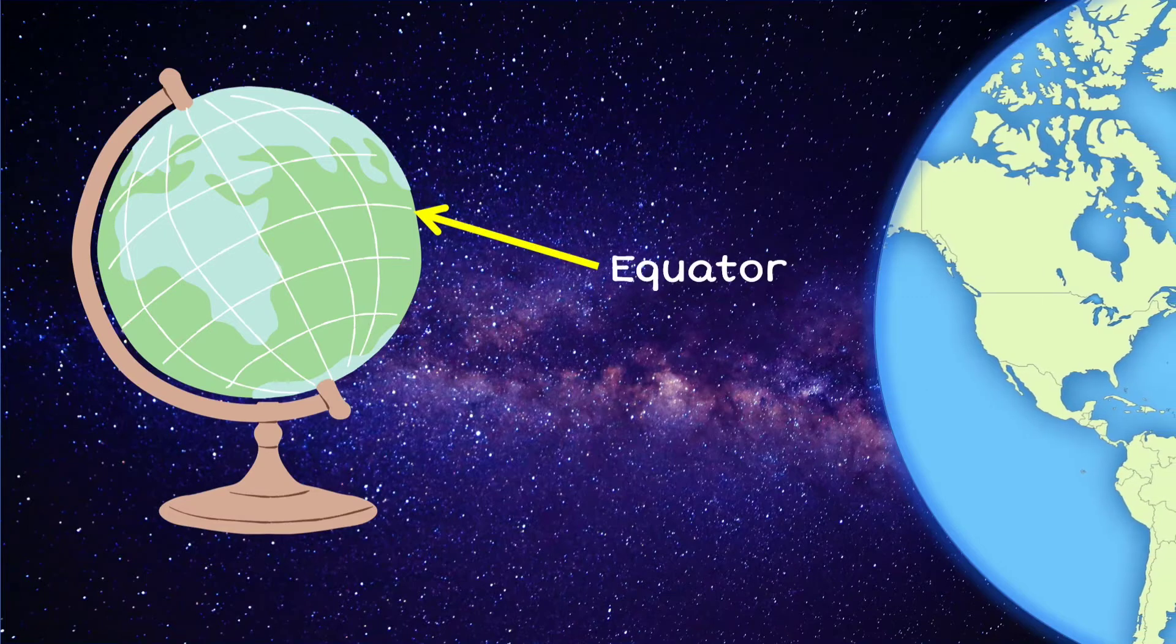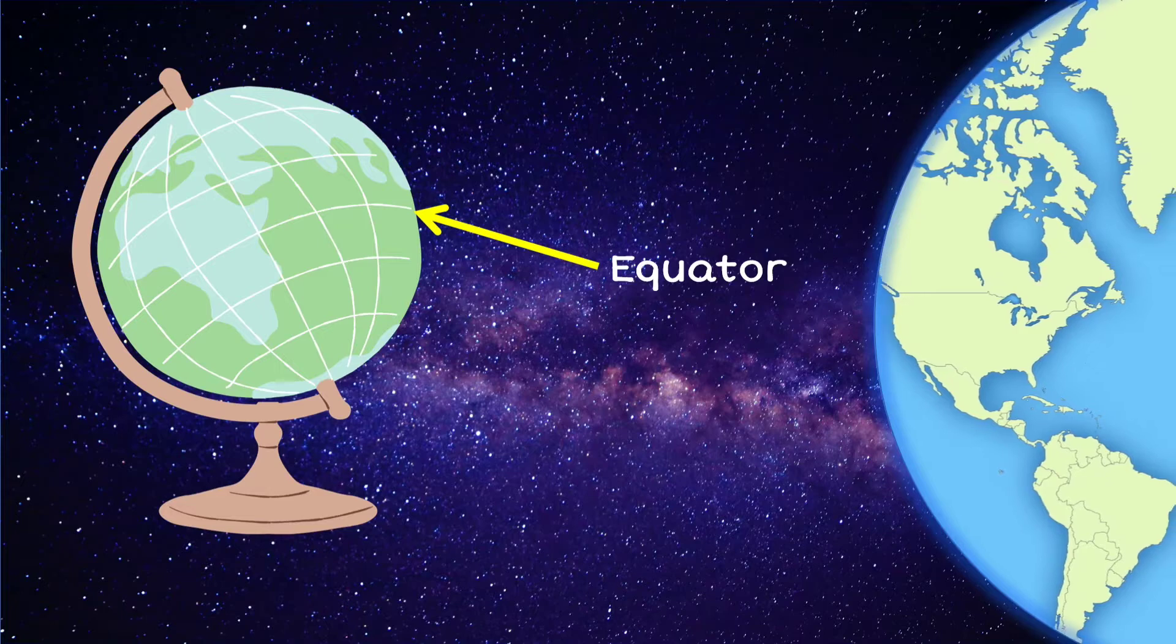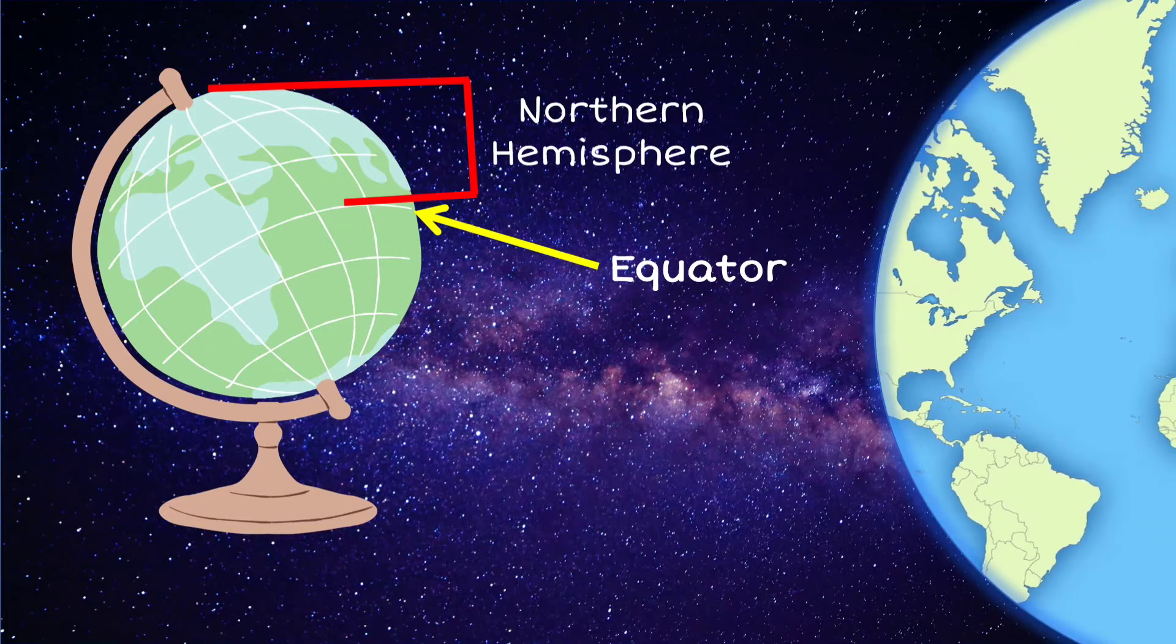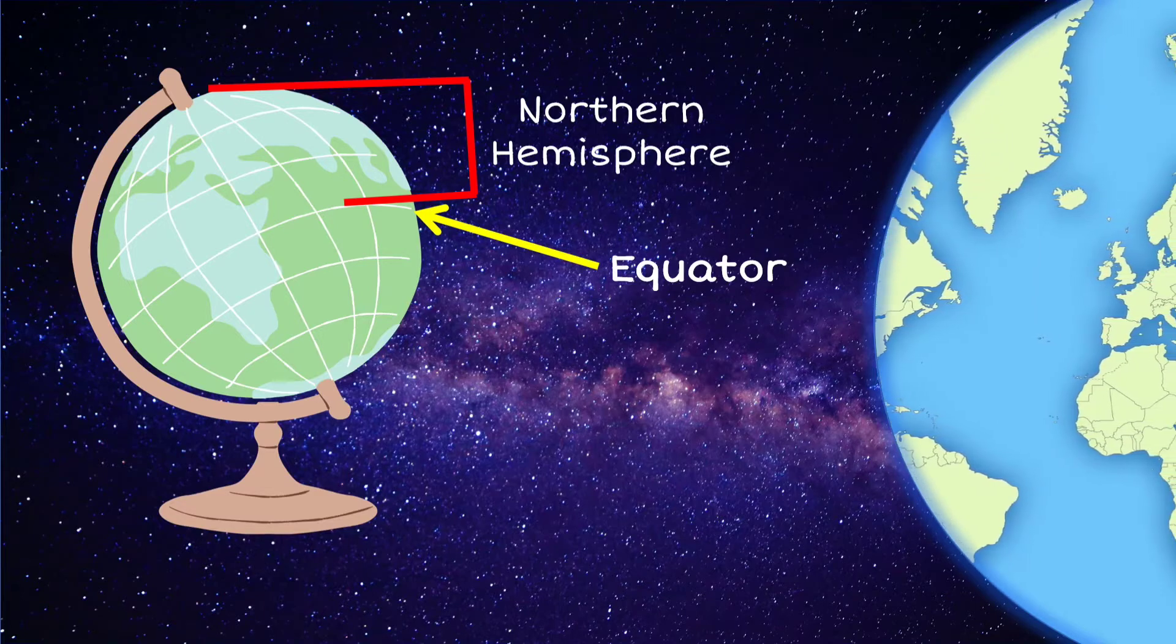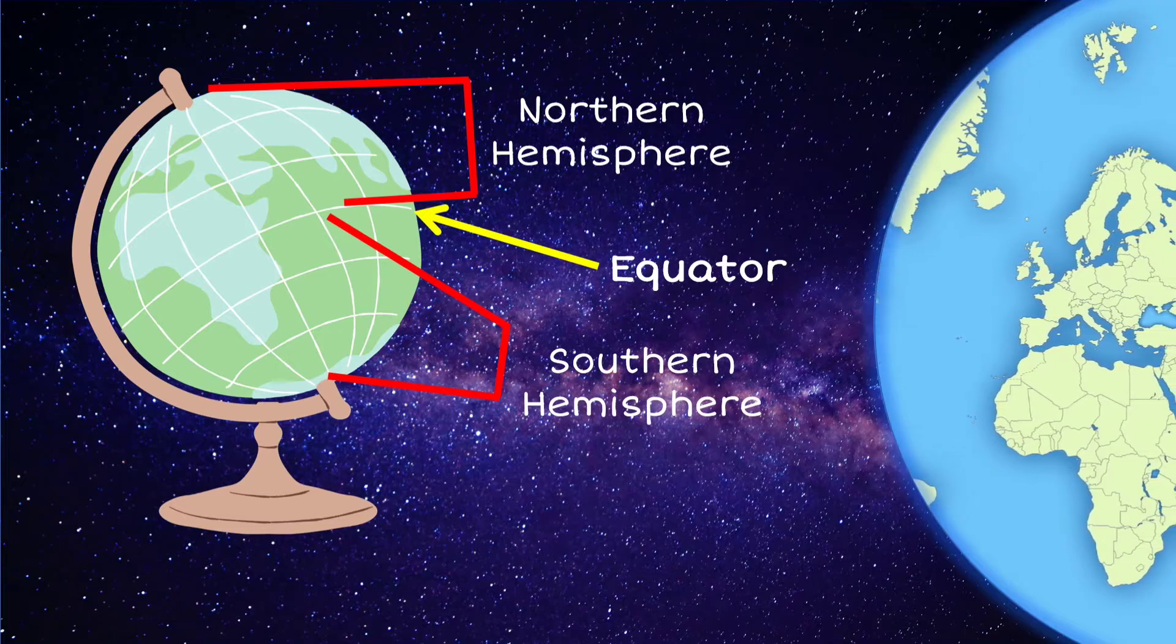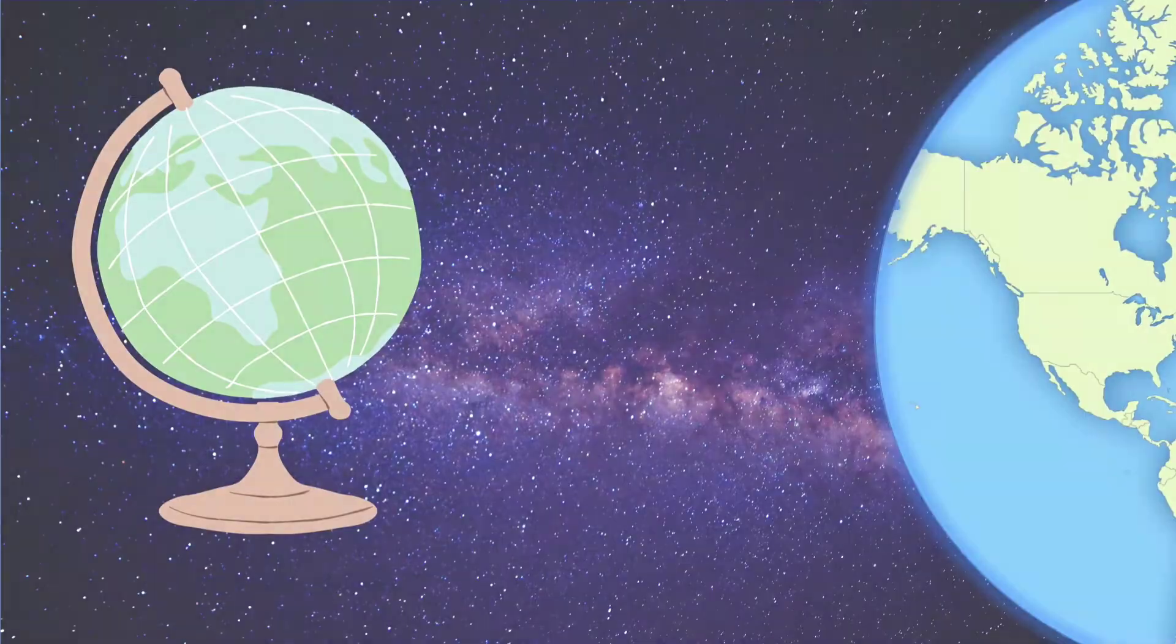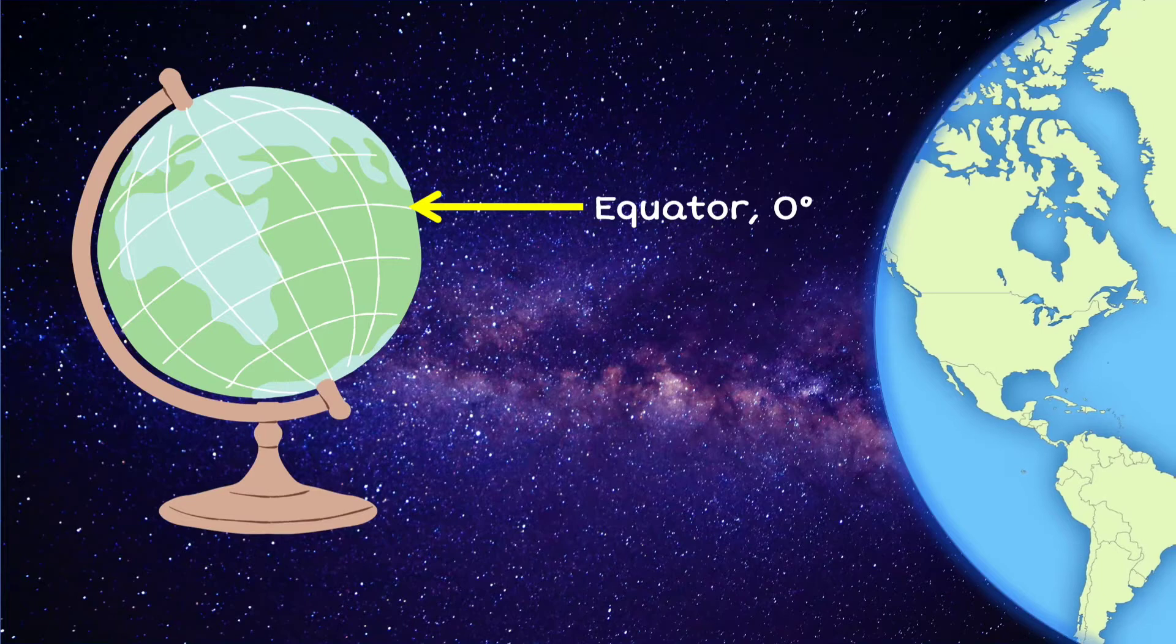The equator is an imaginary line dividing the Earth's surface into two hemispheres. The northern hemisphere, which is half of the globe from the equator to the North Pole. The equator is located at zero degrees.